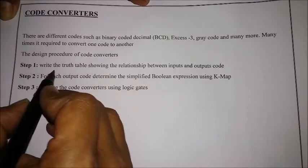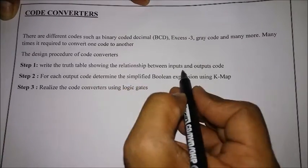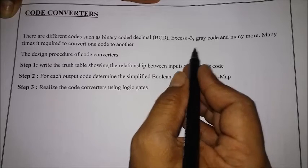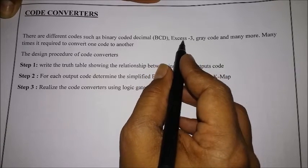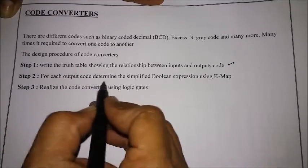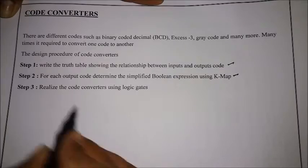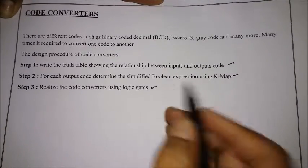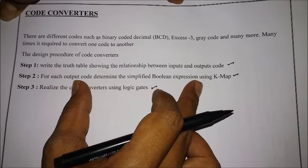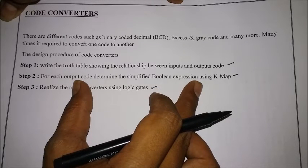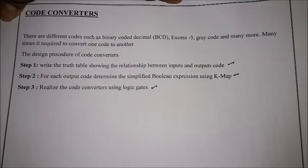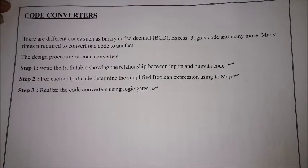Here are the steps we are going to follow to design a code converter circuit. The first step is to write the truth table showing the relationship between the input and output codes — for example, BCD to XS3, or Gray code to BCD, or XS3 to Gray code. Next, for each output code, determine the simplified Boolean expression using a K-map. The third step is to realize the code converter using logic gates.